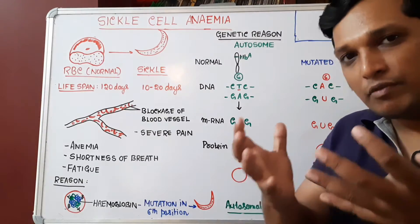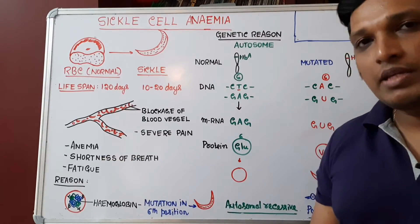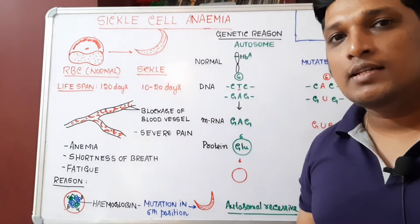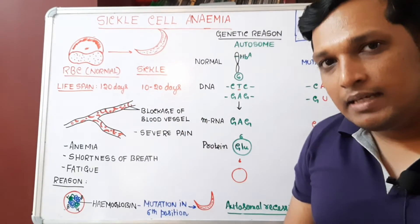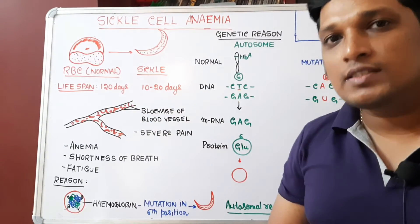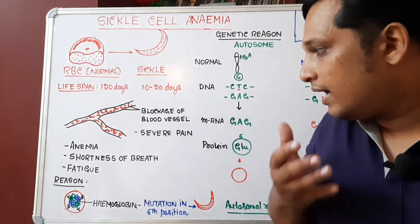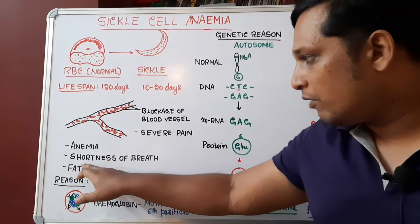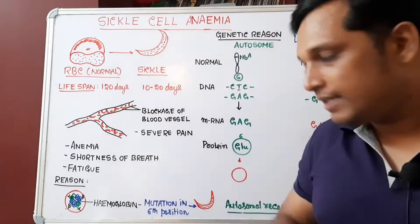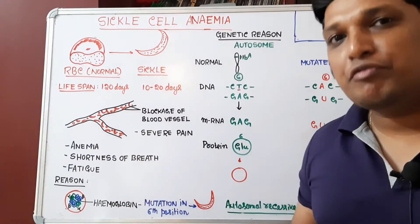As the number of RBCs decreases, there is less blood — the condition of having less blood is called anemia. Blood is required to carry oxygen, so lesser RBCs means lesser oxygen-carrying capacity. The person will have shortness of breath.